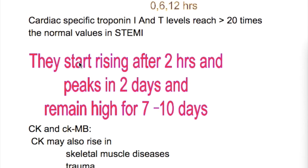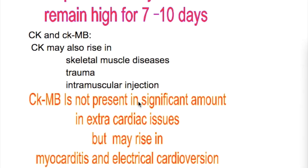What are the starting and peak times of troponin levels? Troponin levels start rising after 2 hours, peak in 2 days, and remain elevated for 7 to 10 days.